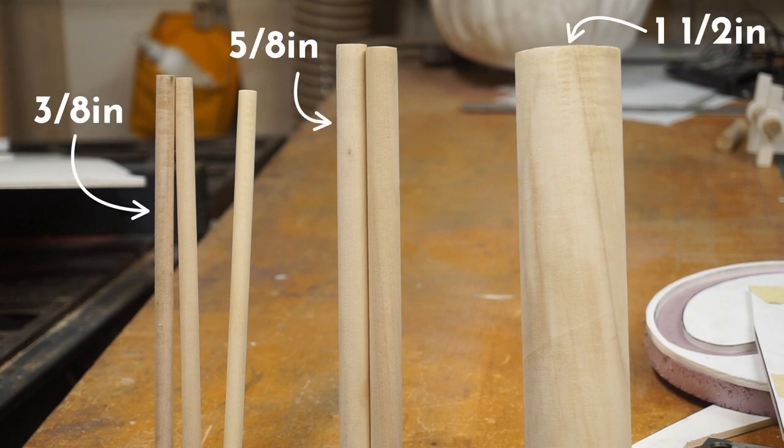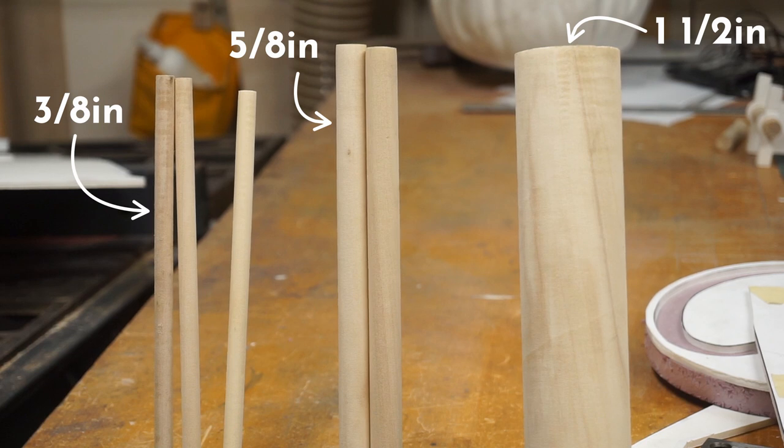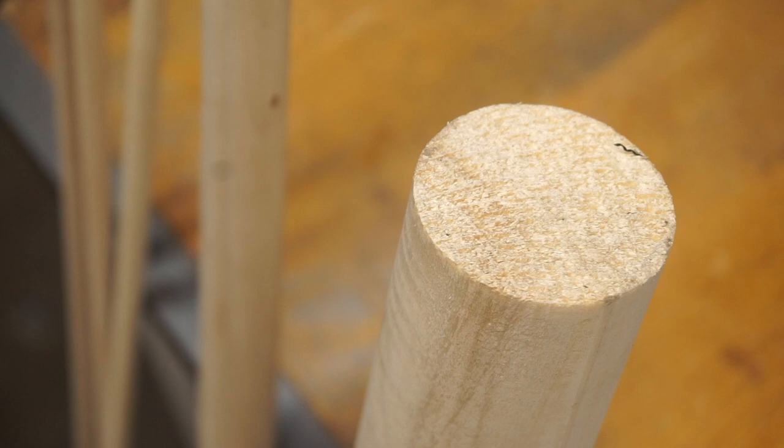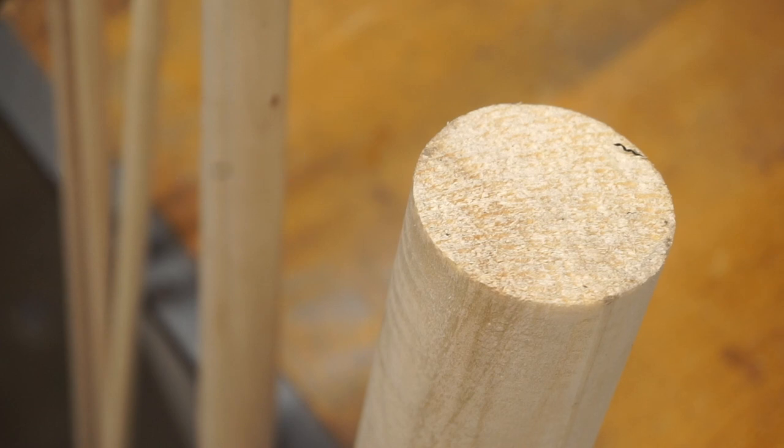There are three main sizes in the CAD model: three eighths inch, five eighths inch, and one and a half inch. There's only one problem. It turns out it's really, really hard to find one and a half inch dowels anywhere. So I bought the next size up, a two inch dowel, and we'll have to turn it down on the lathe.